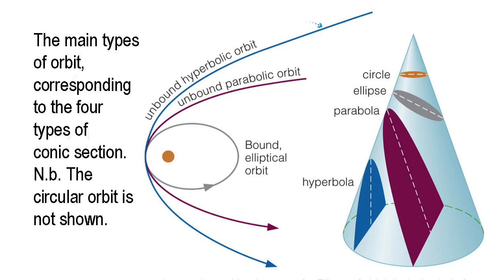Conic sections also represent all the possible orbits an object can follow when under the gravitational influence of a single massive body. A closed orbit, such as that followed by a satellite going around the Earth, has the shape of a circle or an ellipse. An open orbit is one in which a spacecraft or other object doesn't follow a closed circuit around a gravitating body, but simply has its path bent into the shape of a parabola or a hyperbola.